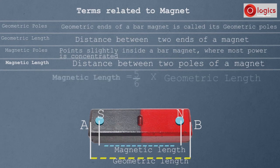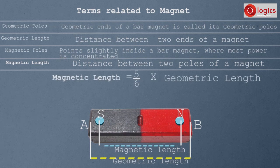For any magnet, magnetic length equals to 5 by 6 of geometric length.